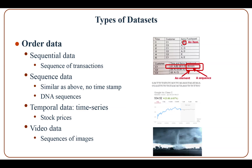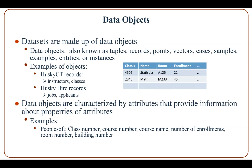A dataset can be viewed as a collection of data objects. Data objects are also known as tuples, records, points, vectors, cases, samples, entities, or instances. Here are some examples: in a university system, instructors and classes can be considered as data objects; in a hiring system, jobs and applicants can be considered as data objects.